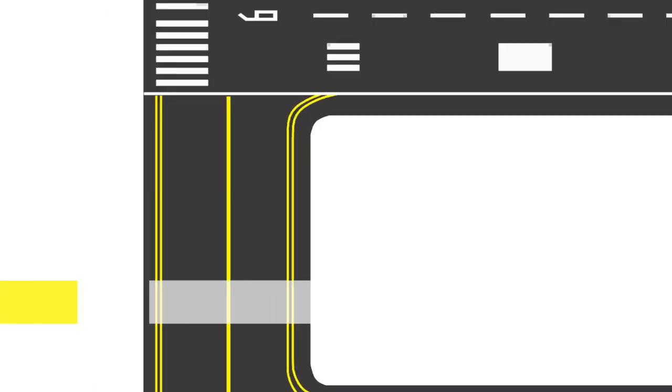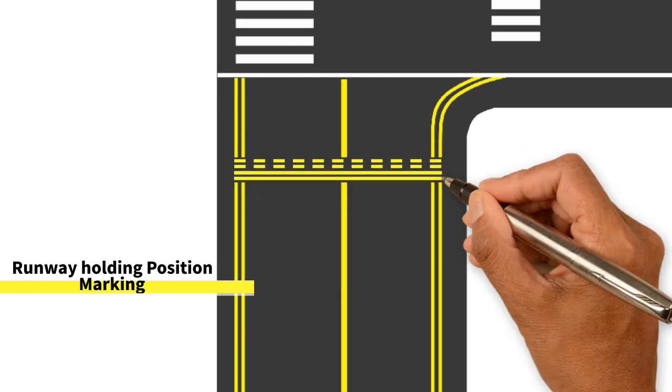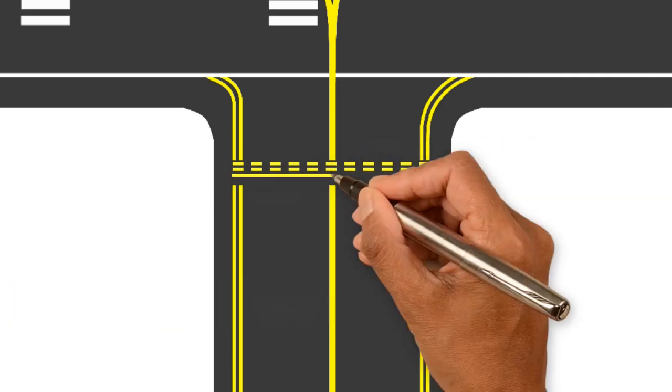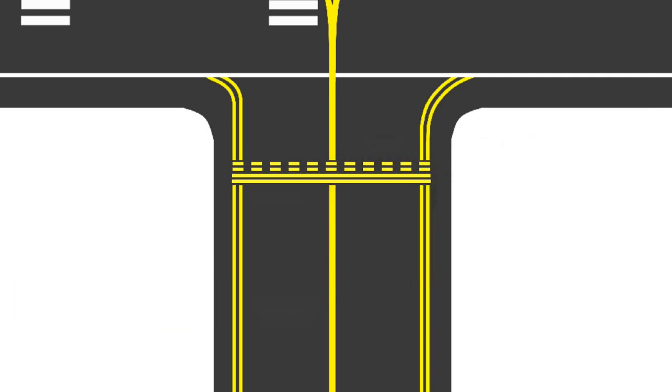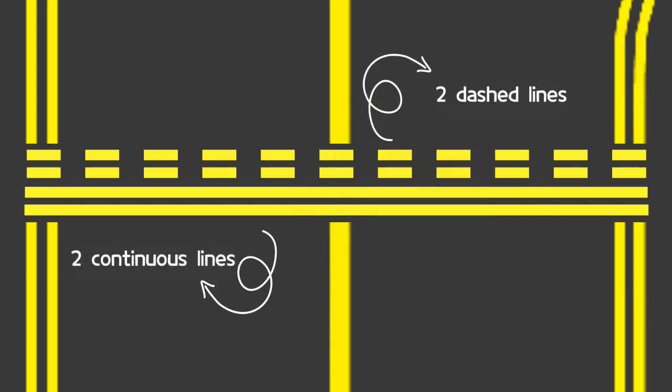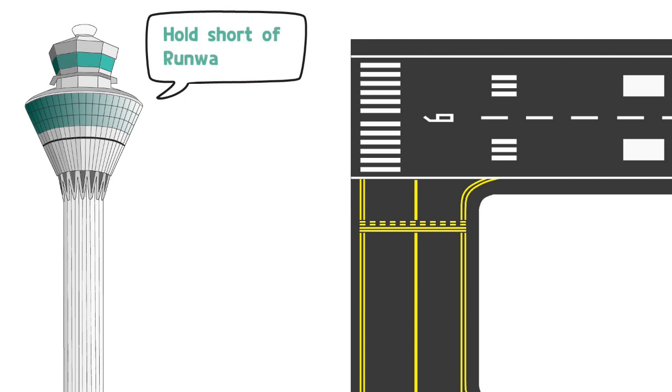Runway holding position markings identify the locations on a taxiway where aircraft must stop when a clearance has not been issued to proceed onto the runway. The runway holding position marking consists of a set of two continuous lines and two dashed lines. When instructed by ATC hold short of runway 9, the pilot must stop so that no part of the aircraft extends beyond the runway holding position marking.